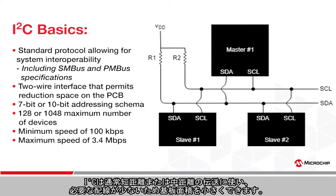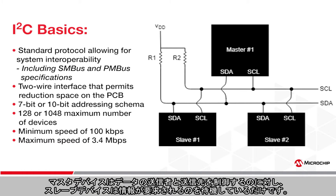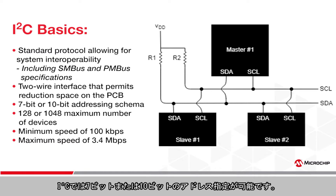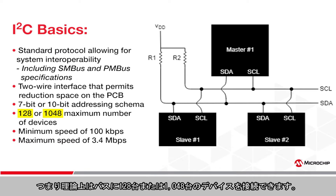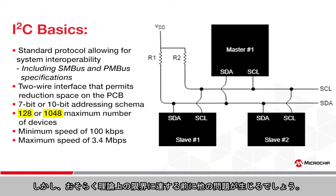The protocol is generally used for short or medium transmission distances and permits lower board space due to the reduction in wires needed. Master devices control who is sending what data, while slaves simply wait to be called on for information. The protocol allows for 7 or 10-bit addressing, which means we could theoretically have up to 128 or over a thousand devices on the bus, although you'll likely run into other issues before hitting those theoretical thresholds.